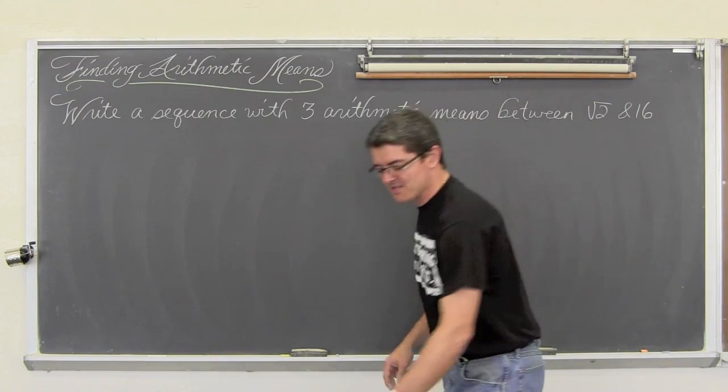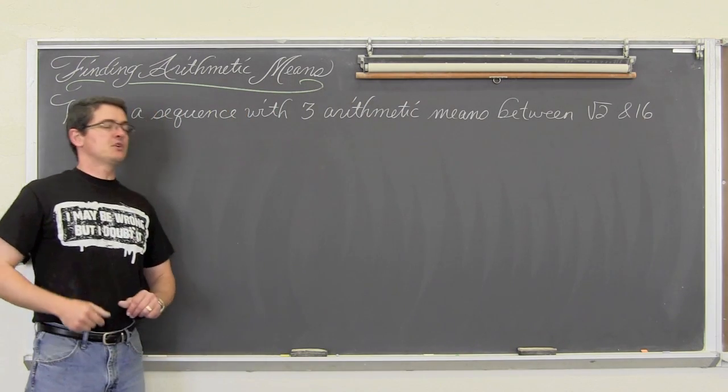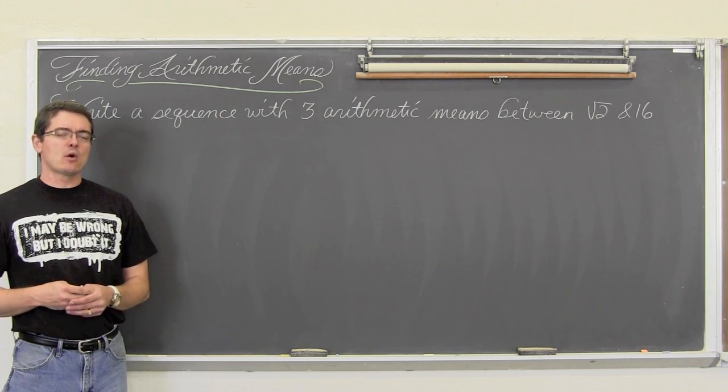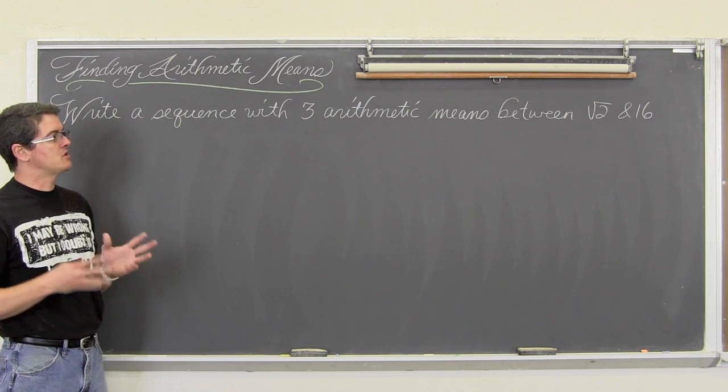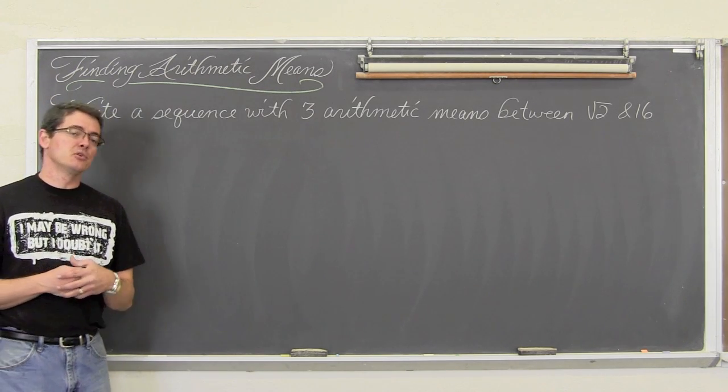So let's see that second example. Alrighty then, our last example: write a sequence with three arithmetic terms between square root of 2 and 16. Now, other than a little bit more arithmetic because of the square root of 2 in there, this example is going to work out just like the last one. So you may want to pause the video and see if you can get it done before I show you the solution.